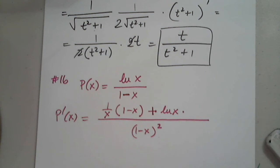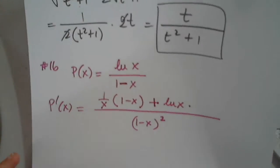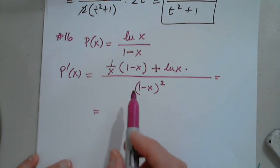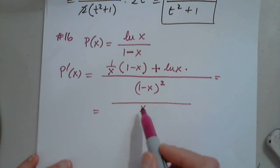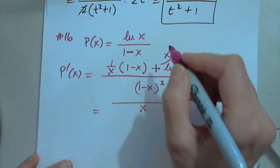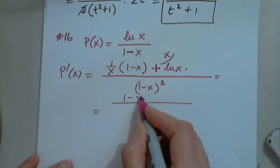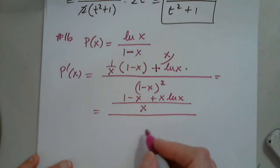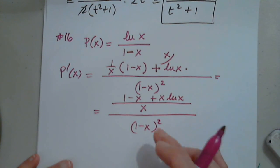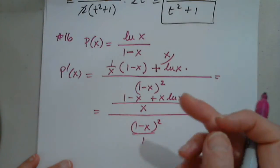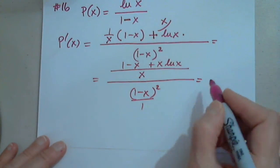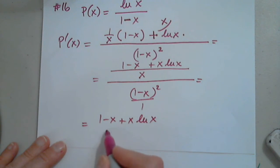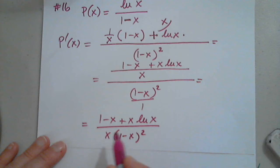We can find the least common denominator in the numerator. The least common denominator is x, so this one needs to be multiplied by x. That gives 1 minus x plus x times natural log x, all over x, and then over 1 minus x everything squared. Final result: 1 minus x plus x natural log x, over x times 1 minus x squared.